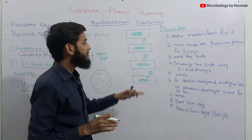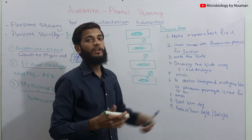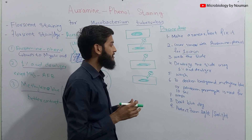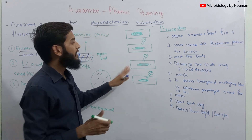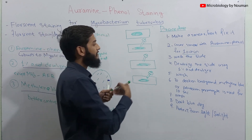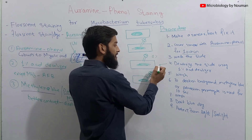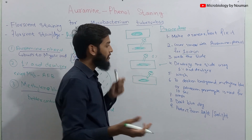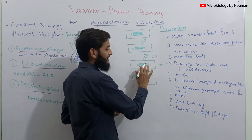After 10 minutes, we wash the slide with clean water — or distilled water if clean water is not available. In the third step, we cover the smear with 1% acid decolorizer, which decolorizes all cells except Mycobacterium tuberculosis. Then we wash the slide again.